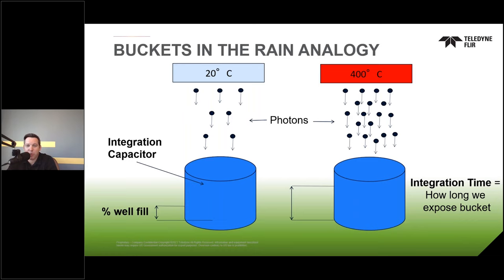Compared to a bolometer, the integration times for a photon counter can be drastically shorter — at a few hundred nanoseconds or less — though the practical minimum is typically around 10 microseconds or a little less, because users often apply ND filters to control energy flow and maintain best performance and most accurate data on those detectors.